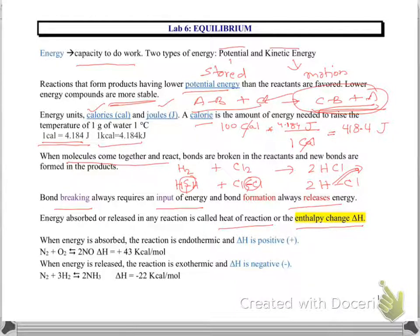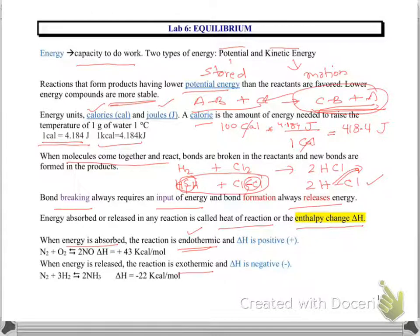There are two main types of reactions: endothermic and exothermic. For endothermic reactions, more energy is required to break the bonds compared to the energy released when new bonds form — so the net change is that energy is absorbed. If the net change is that more energy is required to break bonds than is released, we call those reactions endothermic, and the delta H sign — the heat of reaction — will be positive.